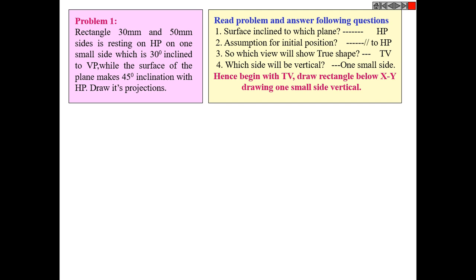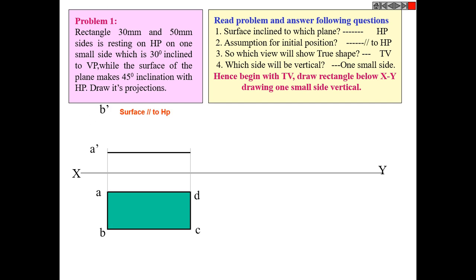Begin with the top view. Draw a rectangle below XY line, drawing one small side vertical. This is the whole rectangle. Mark the views, then take the projection for a front view.